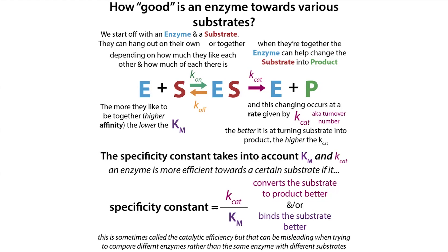Think about your car: if you want an efficient car, it's going to be able to go a long way with a little bit of gas and not leave much waste. Similarly, we want our enzyme to make product without extra waste and to do it fast. So we want to take into account both the Kcat and the Km.